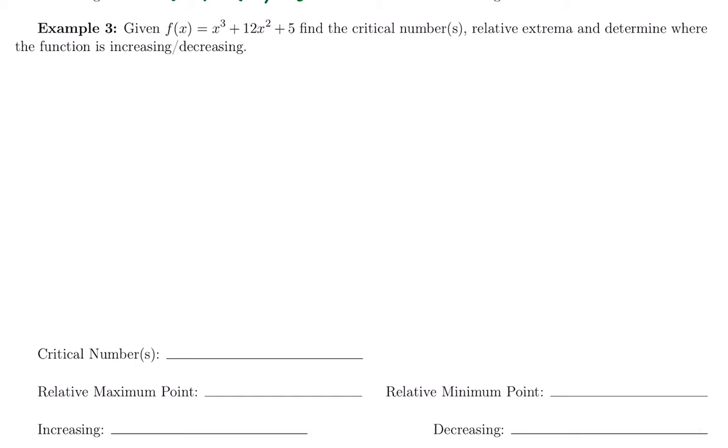So our first step is going to be to take the derivative and set it equal to 0. So our derivative here, we're going to bring down the power, and the derivative of x cubed is going to be 3x squared. The derivative of 12x squared is going to give us 24x, and then the derivative of 5 is a constant, so the derivative is 0.